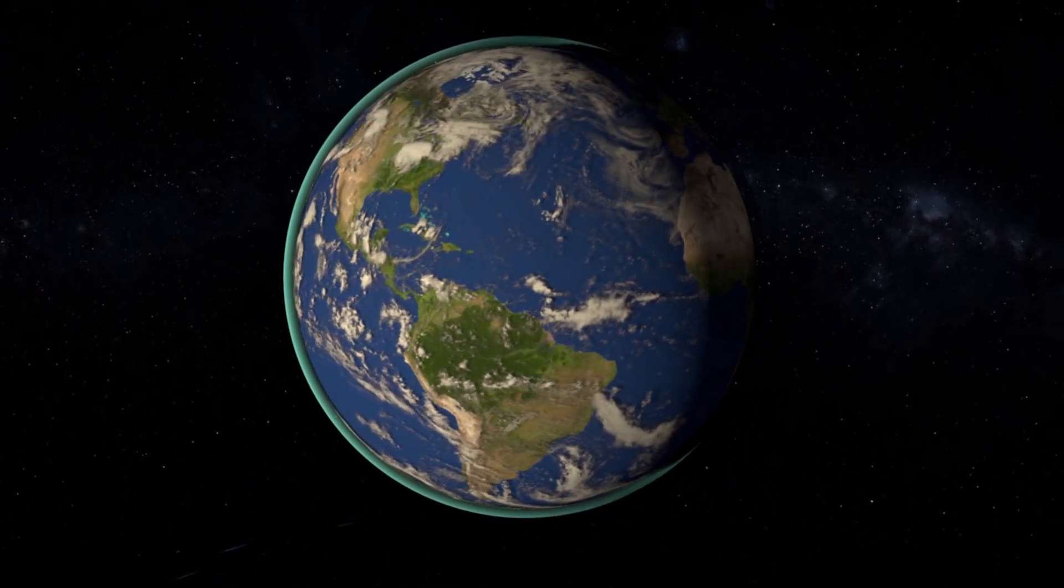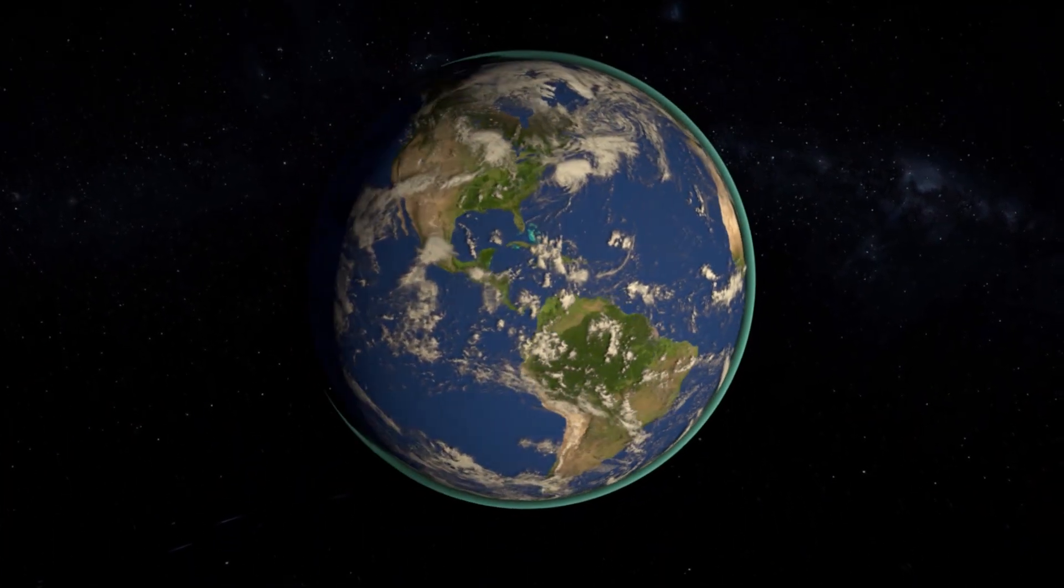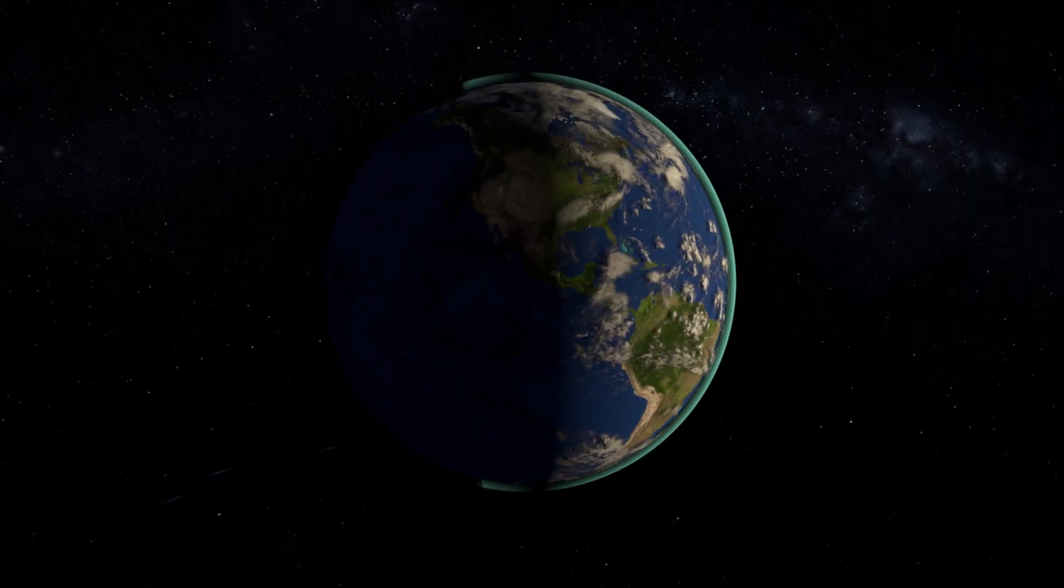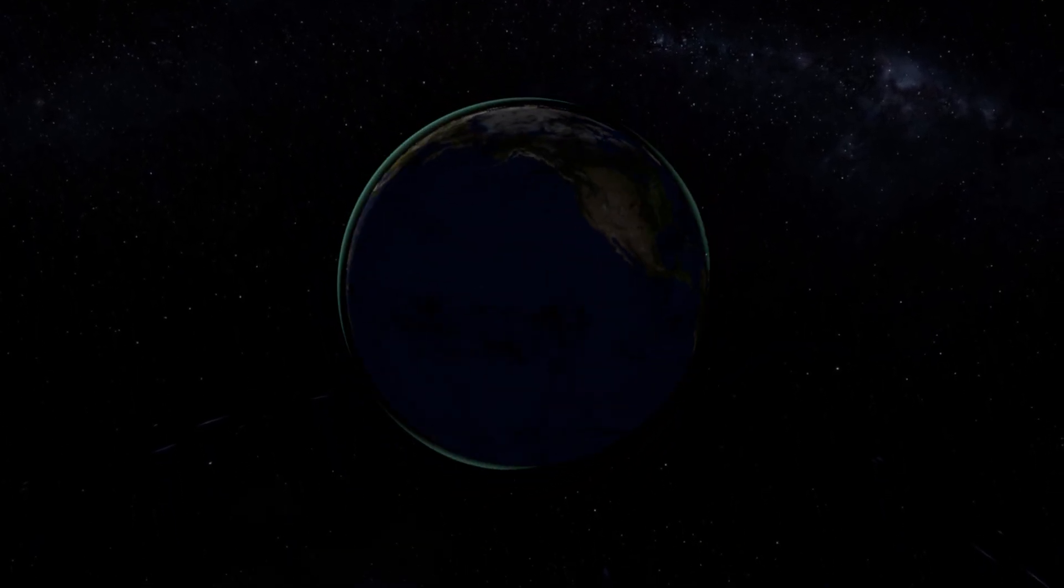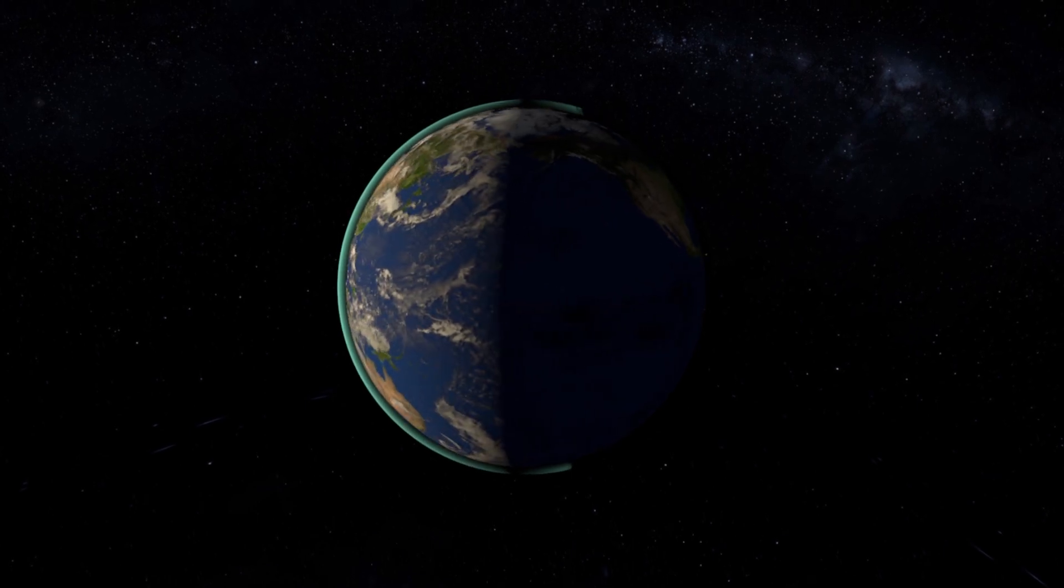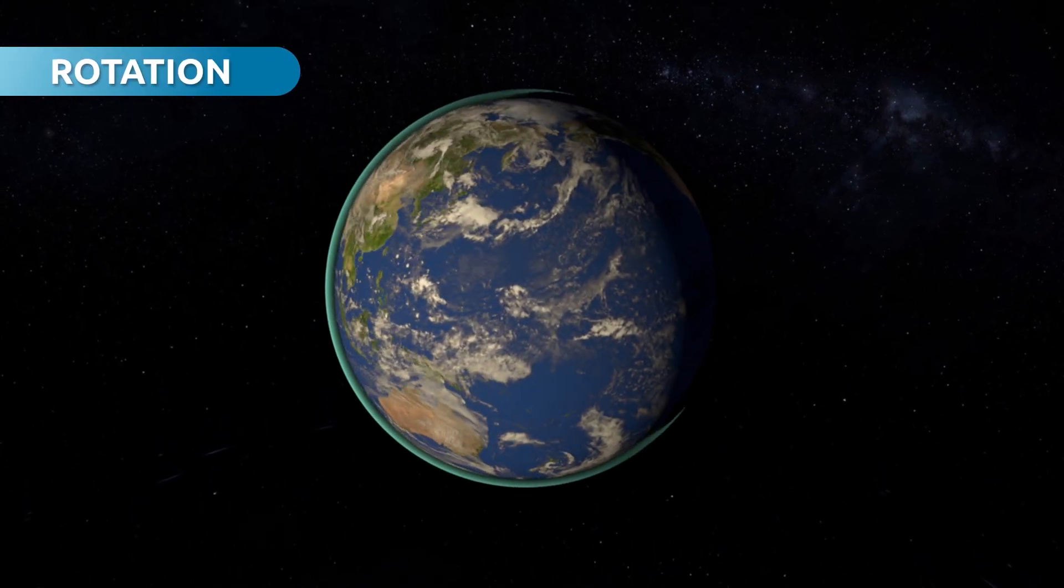Just like the rest of the planets in the solar system, planet Earth moves in two ways: rotation and revolution. Can you see how the Earth is spinning around its axis? This movement is called rotation.